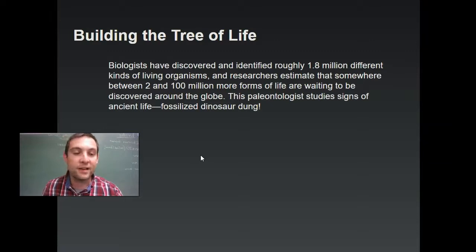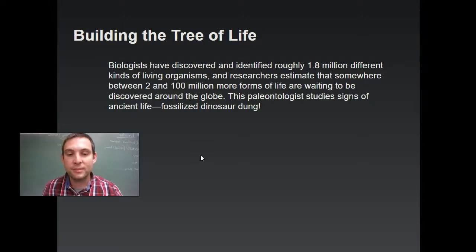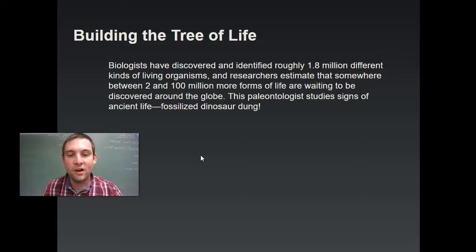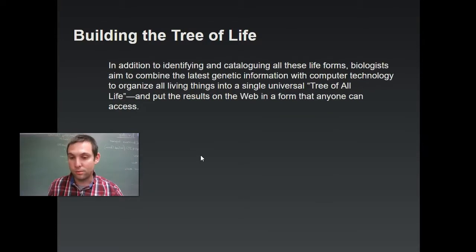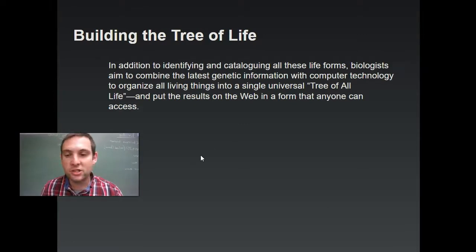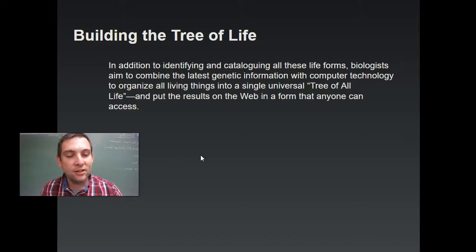Biologists have discovered and identified roughly 1.8 million different kinds of living organisms, and researchers estimate that somewhere between 2 and 100 million more forms of life are waiting to be discovered around the globe. The paleontologist studies signs of ancient life, including fossilized dinosaur poop. Biologists aim to combine the latest genetic information with computer technology to organize all living things in a single universal tree of all life.